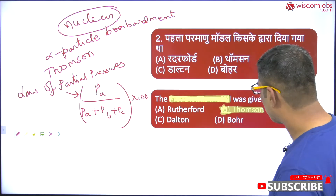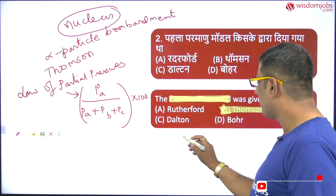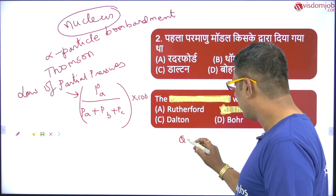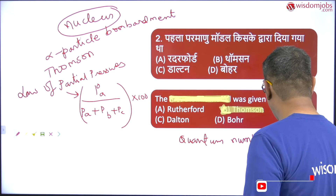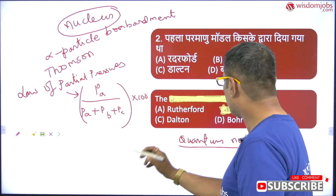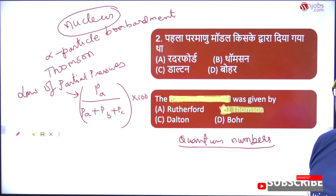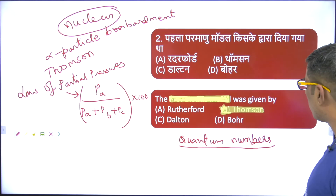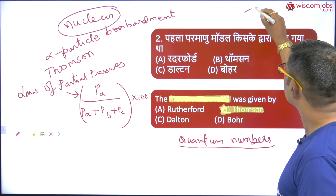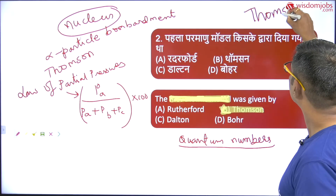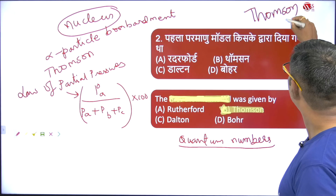Coming to Bohr — Bohr proposed one of the quantum numbers, so Bohr is in no way concerned with the first atomic model. Therefore, the correct option is Thompson, which is option B.